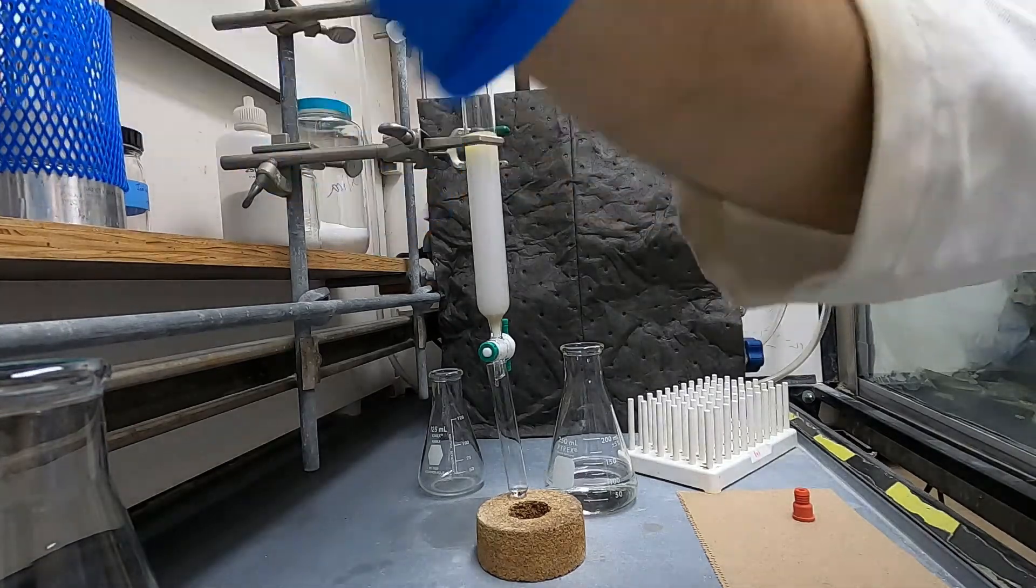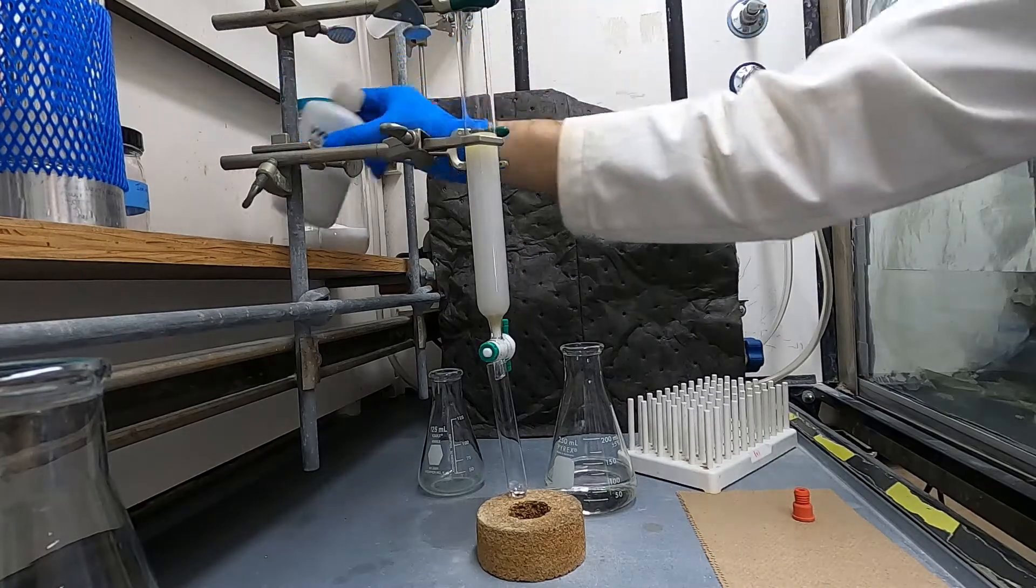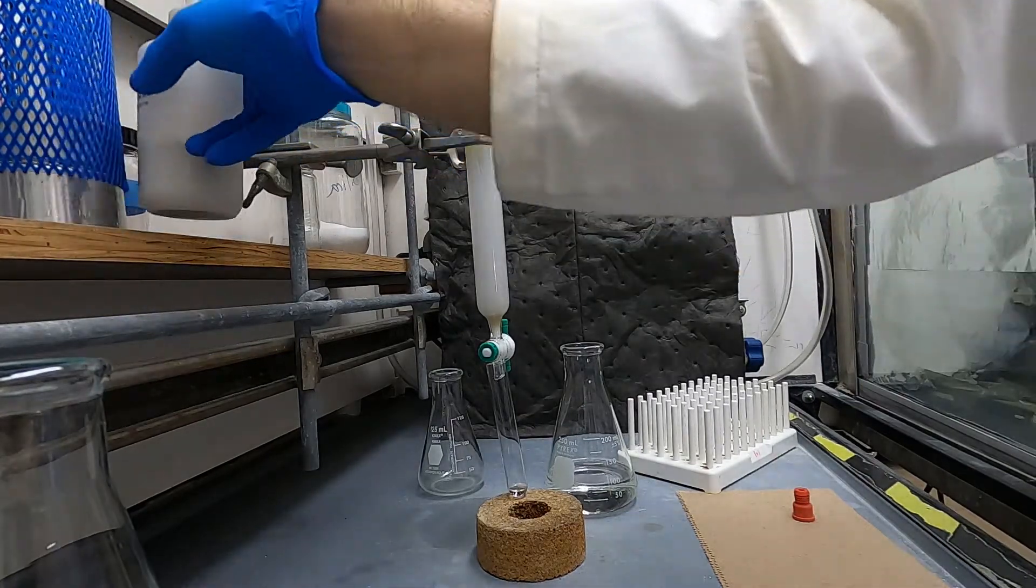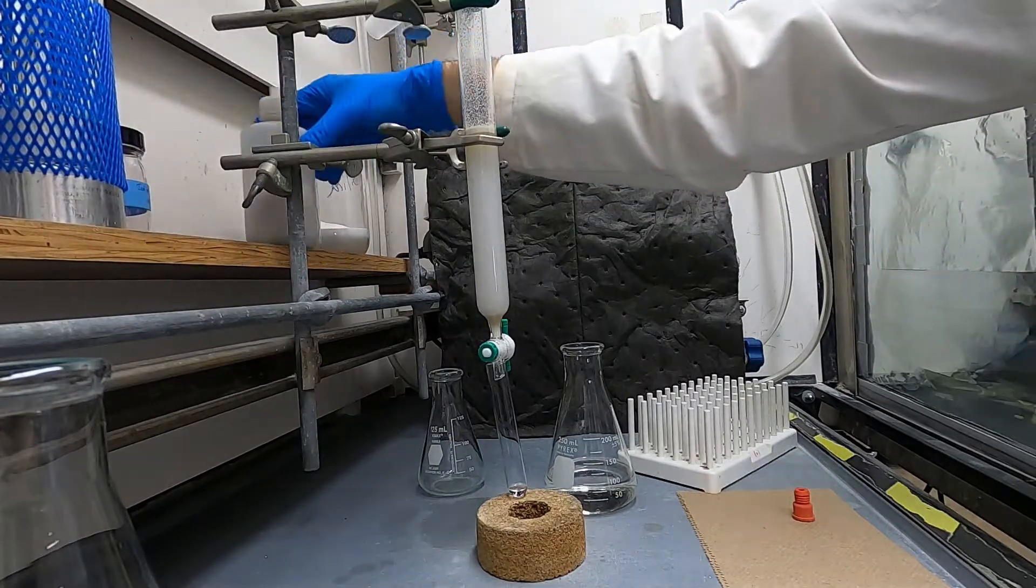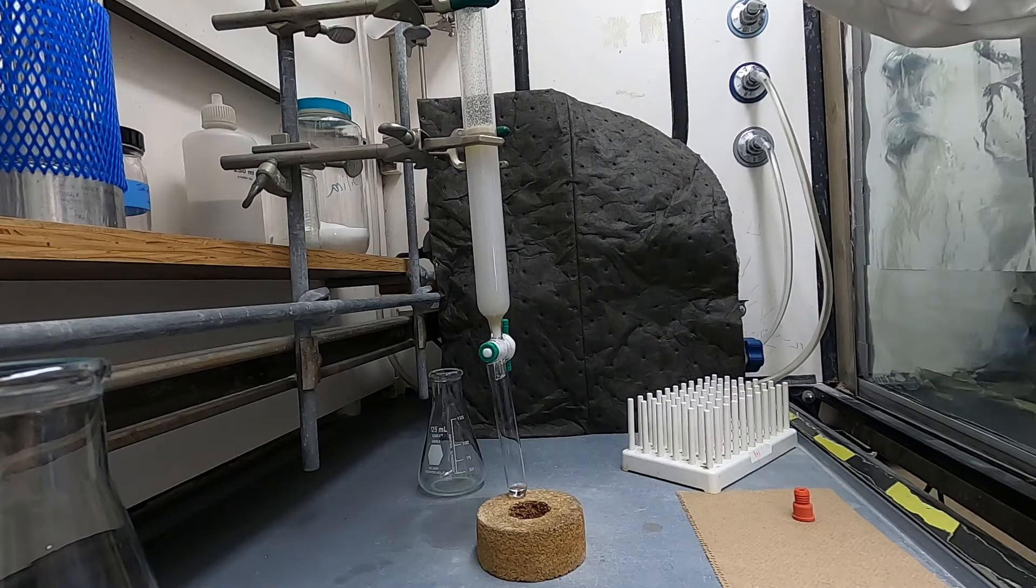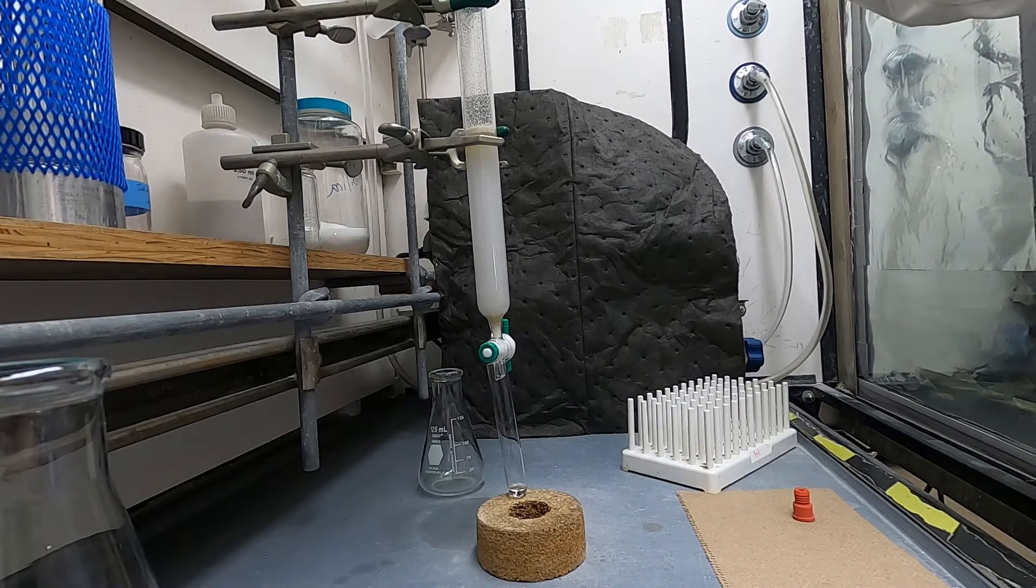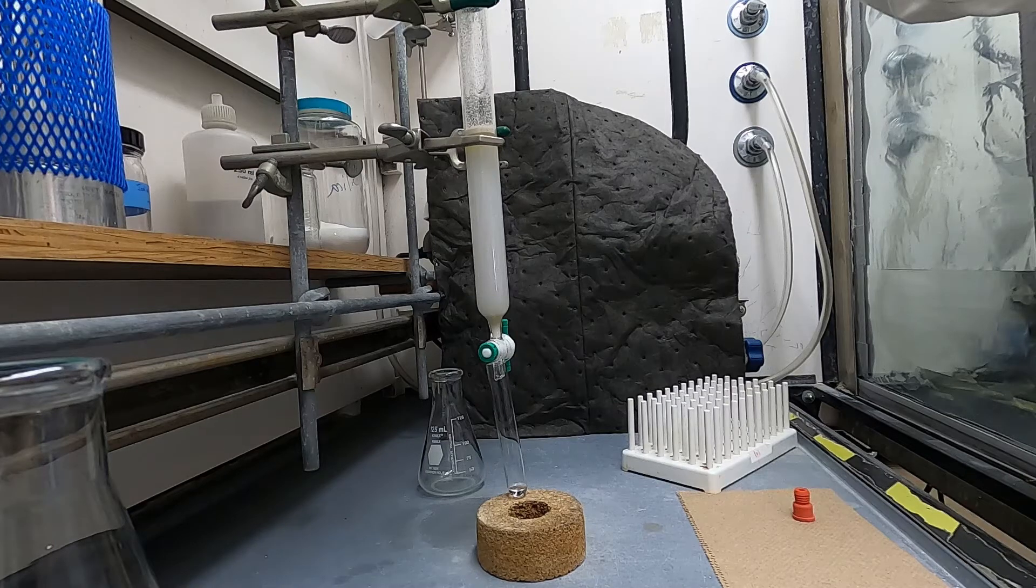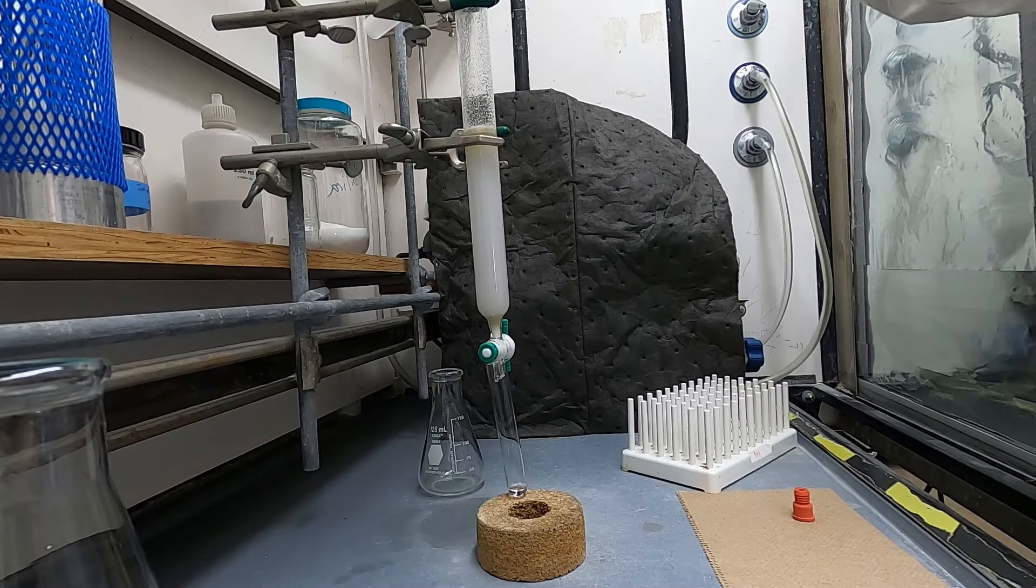Once it's at the surface of the silica I add another layer of sand. The amount of sand you add here doesn't really matter. I usually add a fair amount and then add more mobile phase to the top and here you want to do it slowly so that you can rinse down the sand but also you don't want to disturb the silica layer.